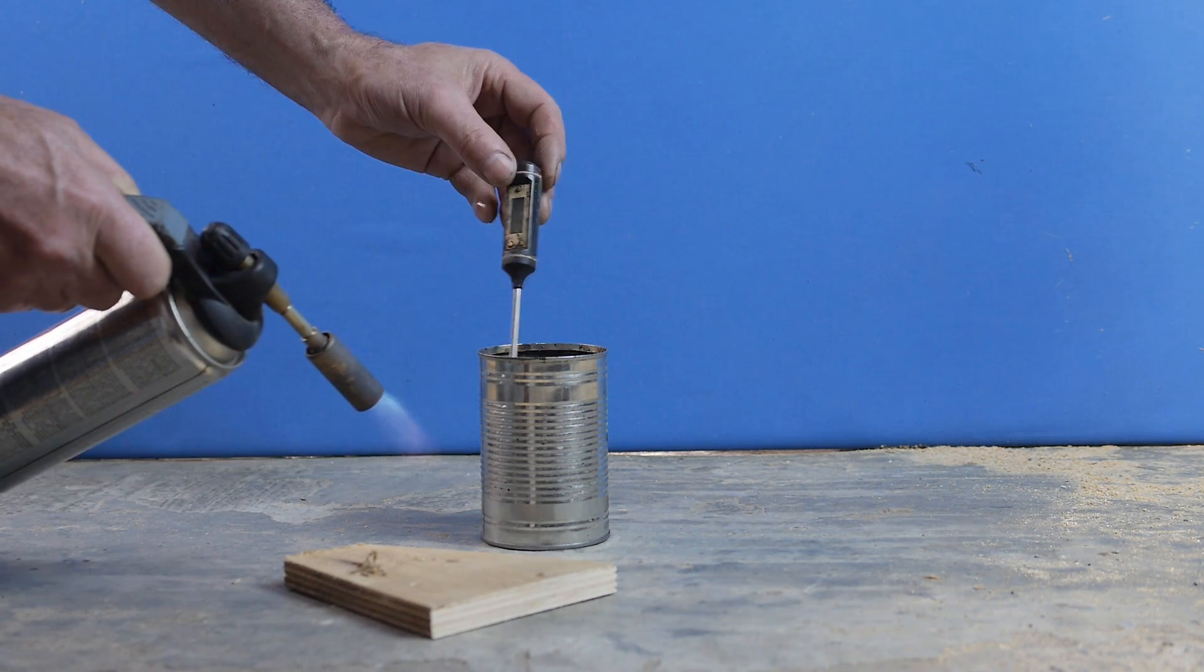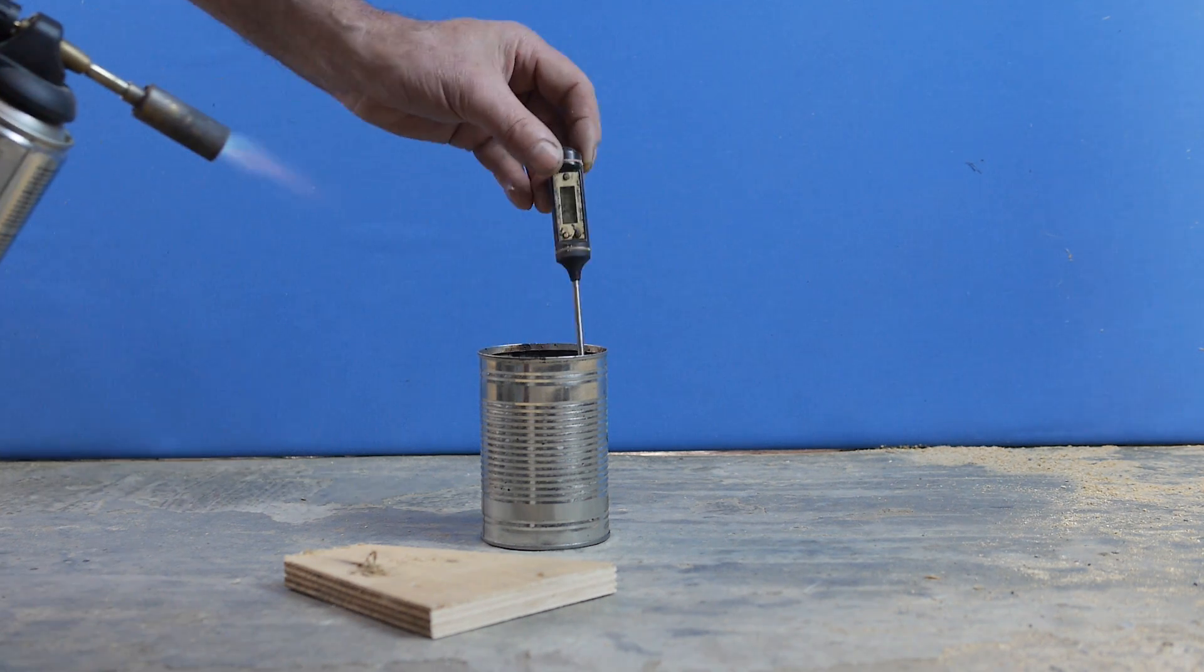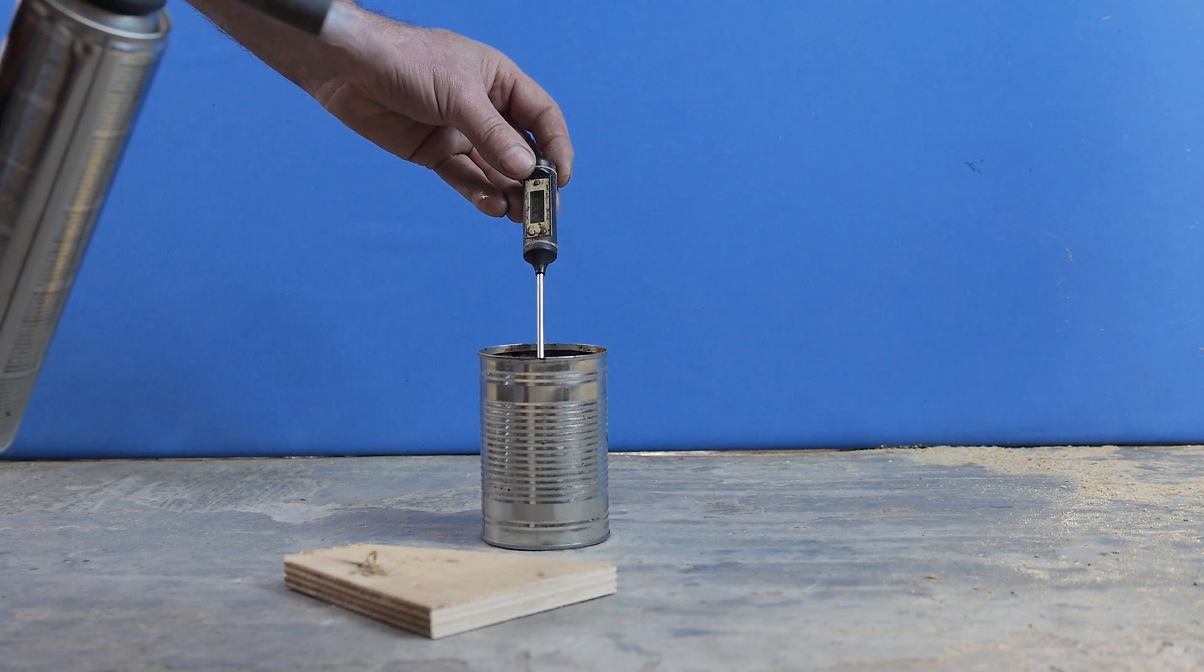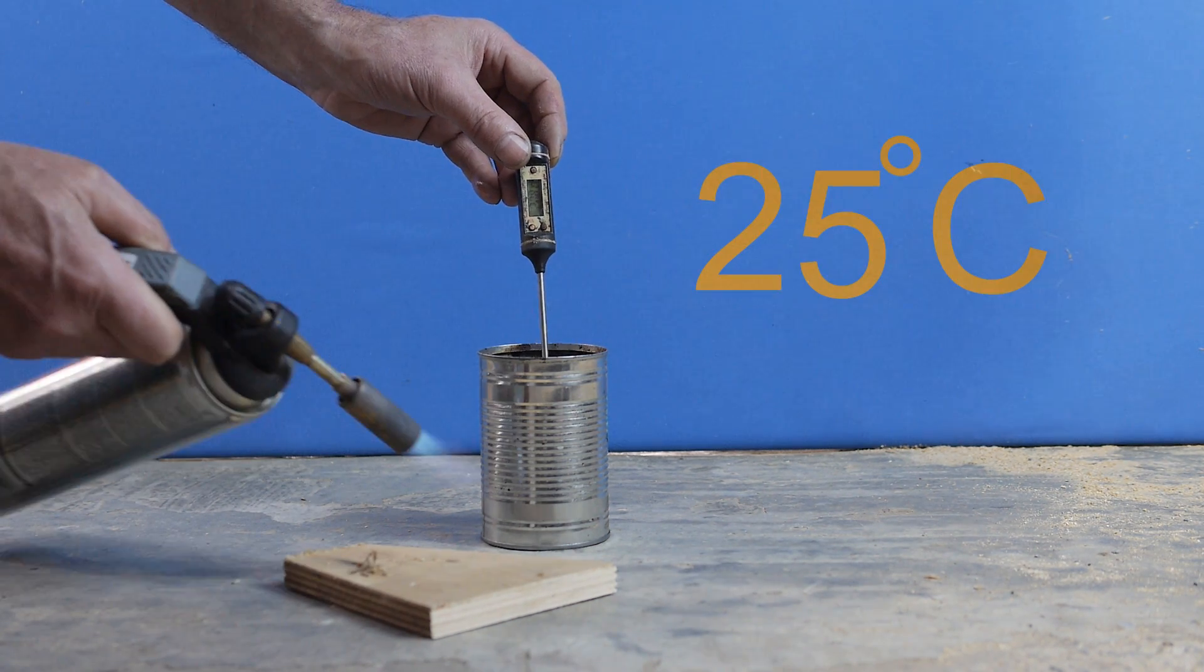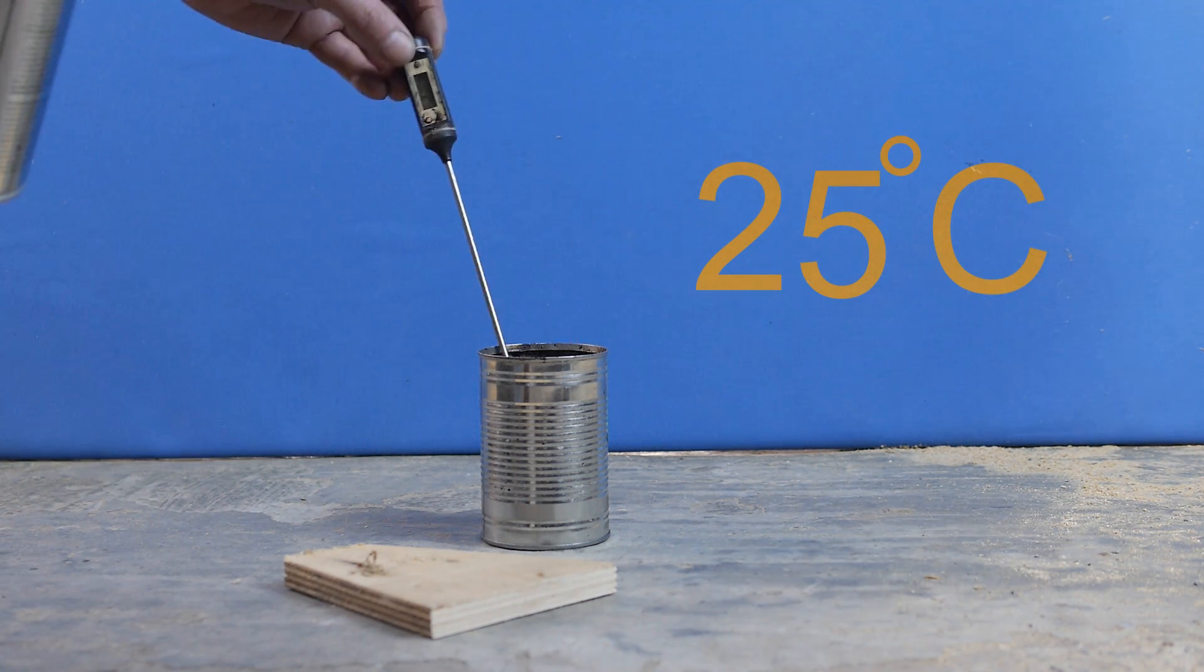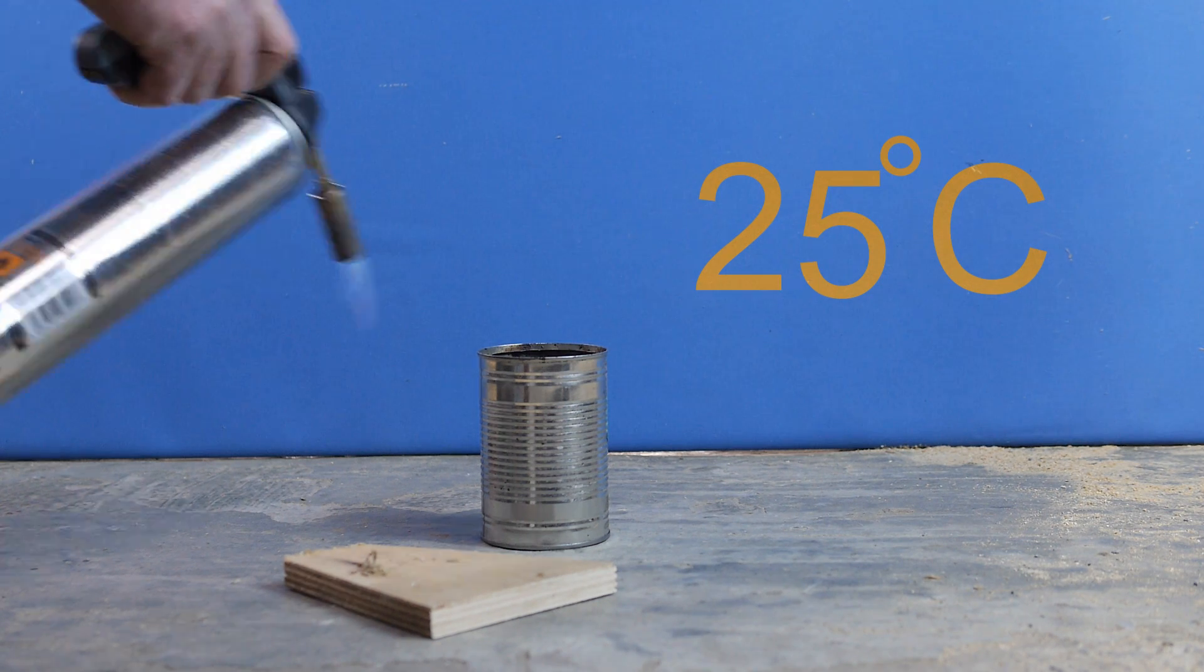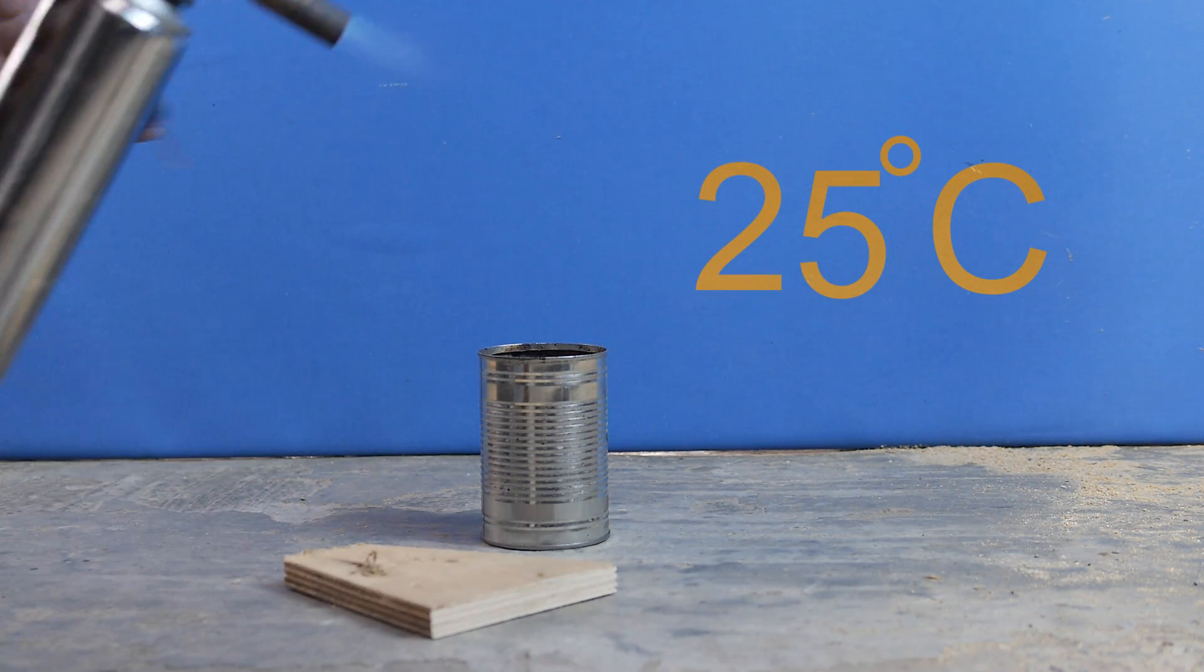So put your thermometer into the fuel and use the gas flame to gently heat the sample up. You want it to rise about five degrees. So you can see we're at 25 degrees centigrade now. Remove the thermometer and again pass the flame over the top of the can. Nothing happened.